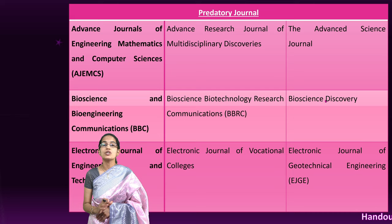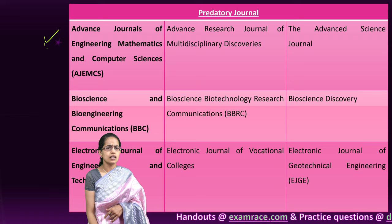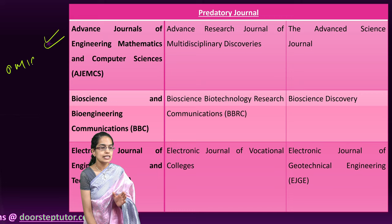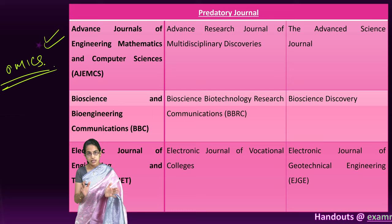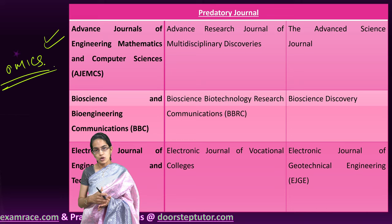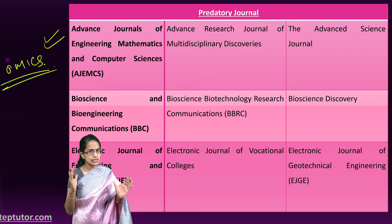Here is a list of certain predatory journals commonly heard of. One of the recent cases is the Hyderabad-based OMICS group, which published more than 700 journals, charging huge amounts of money from individual candidates. Later on, the false claims about their peer reviews were verified, and there was a huge disagreement. This group was finally added to the list of predatory journals.